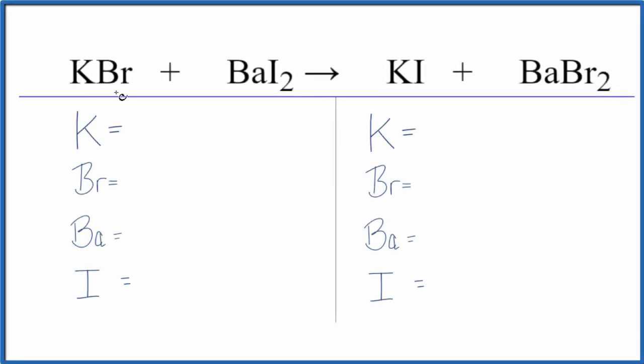In this equation we have KBr plus BaI2. This is potassium bromide plus barium iodide. To balance the equation let's count the atoms up on both sides.